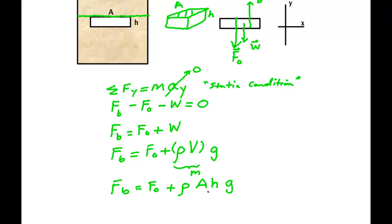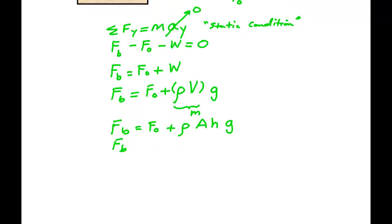Now, I'm going to divide both sides by the area. So I have FB, let me pull it up a little bit. Divided by the area equals the force on the top divided by the area plus rho times H times G.